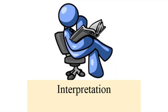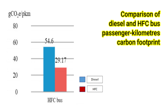Fourthly, the interpretation stage shows the diesel bus will decrease by 25.43 grams of CO₂ carbon footprint per passenger-kilometer when replaced with an HFC bus, with a 47% reduction of diesel bus carbon footprint.